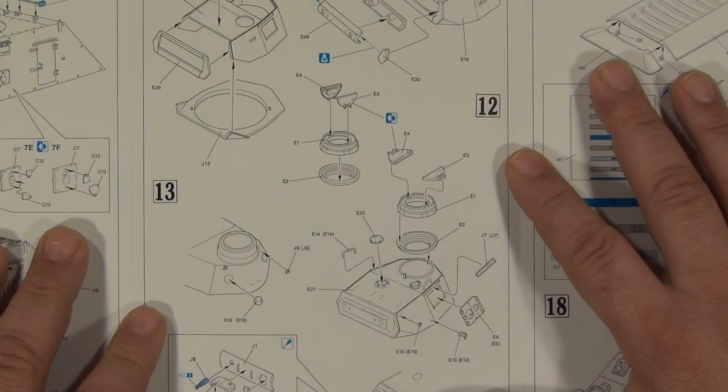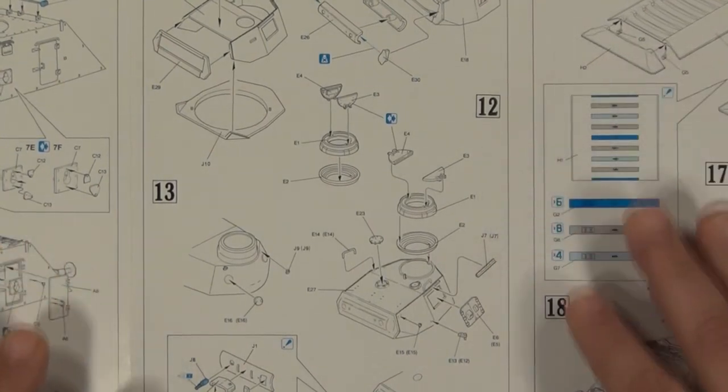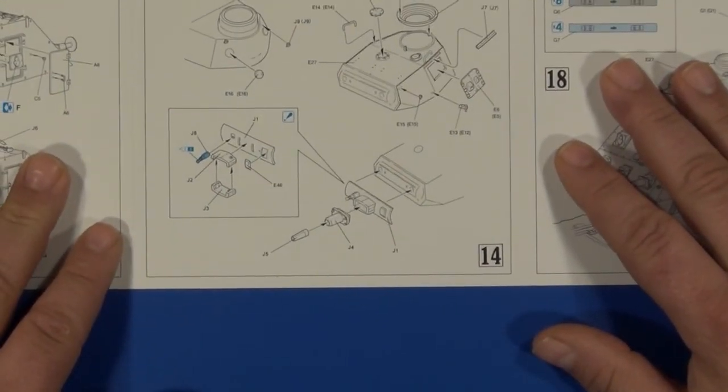Steps twelve and thirteen: turret cupola and details. Step fourteen: gun mantlet final assembly.